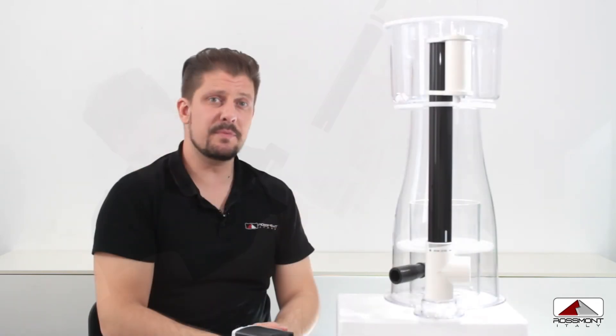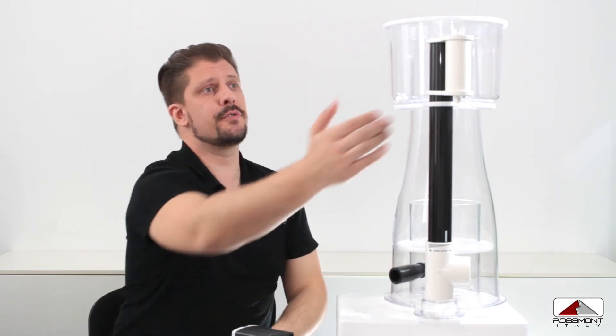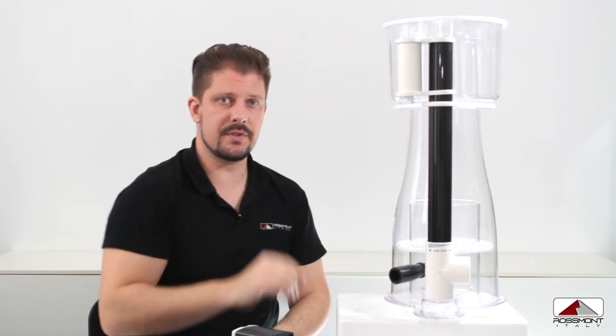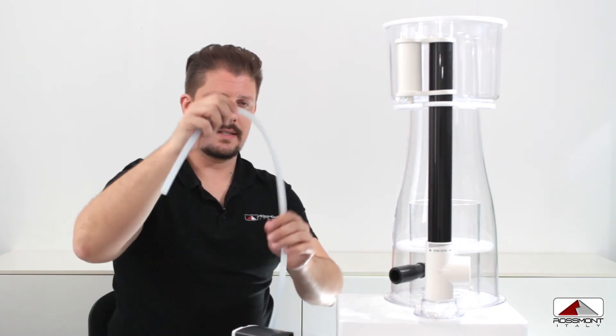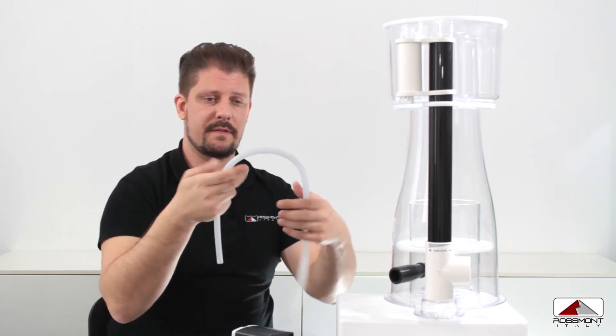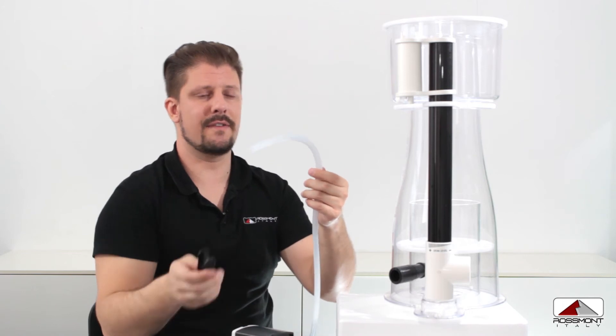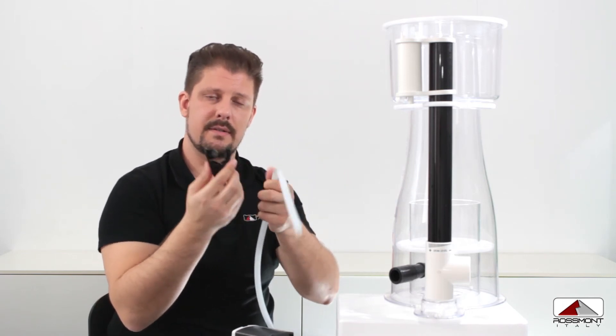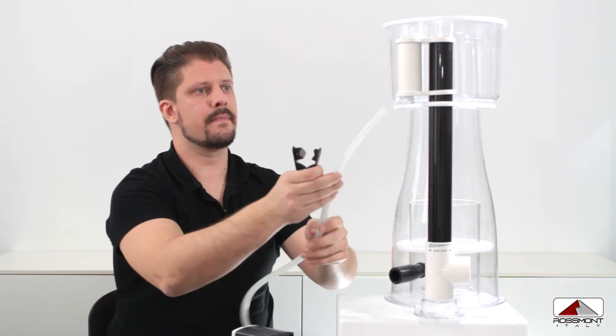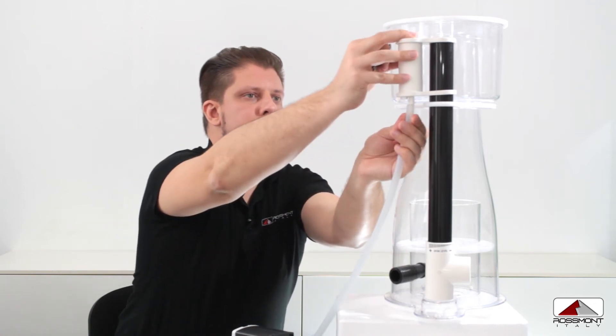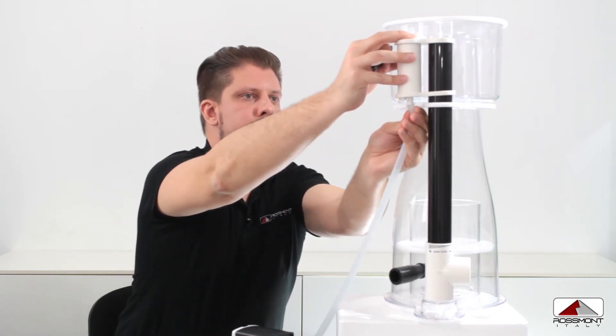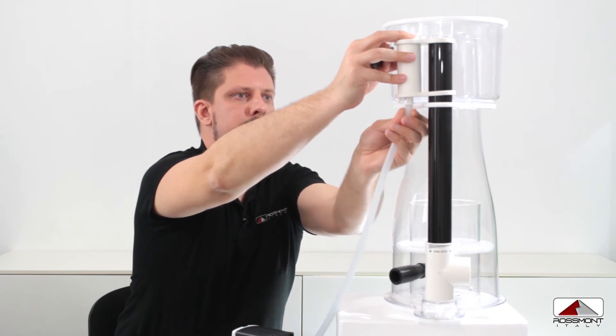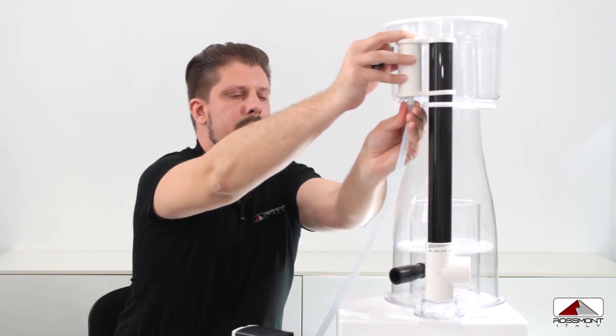The last operation to do is to rotate just a bit the silencer, take a piece of the soft piping, the connector included, and you plug the soft piping into the silencer in this way.